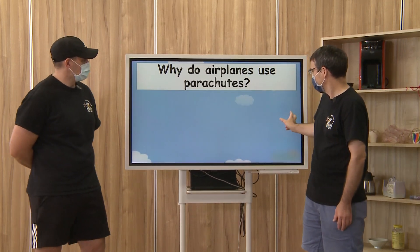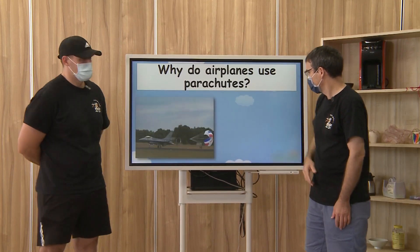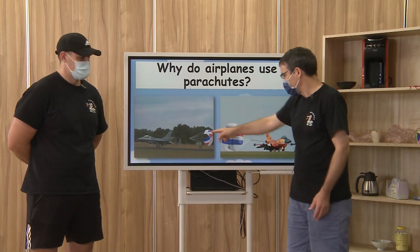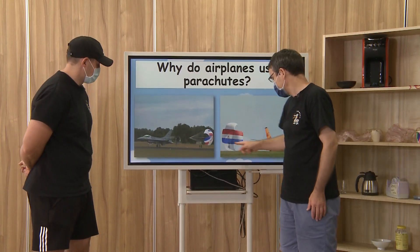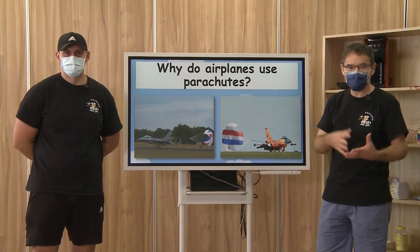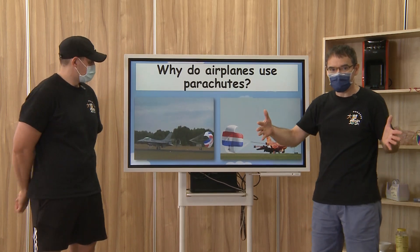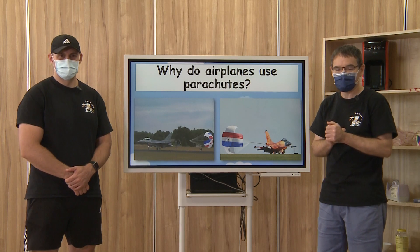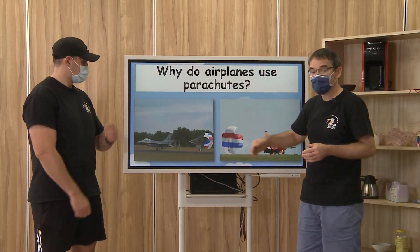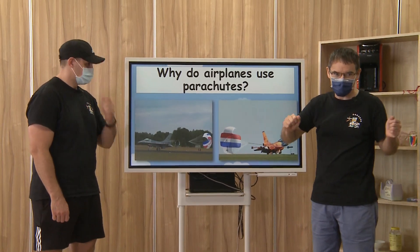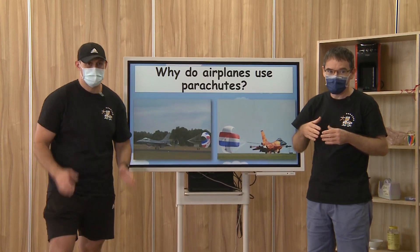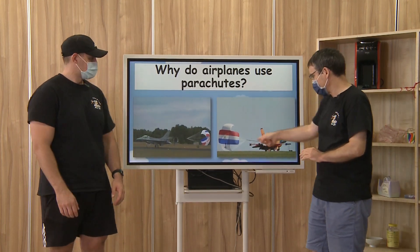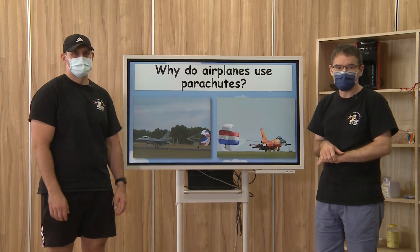So why do airplanes use parachutes? Similar to the cars, when the airplane lands, sometimes they need to stop quickly and the runway is not long enough. Like these military planes — they land on aircraft carriers, which have a really short runway, not long like an airport runway. So they have to be able to stop pretty quickly.